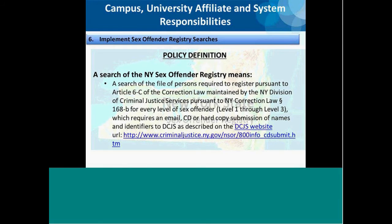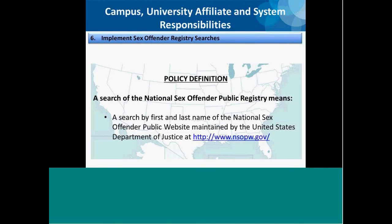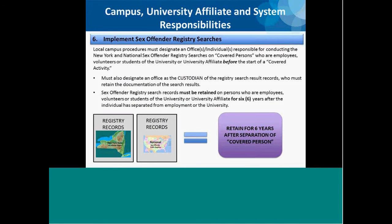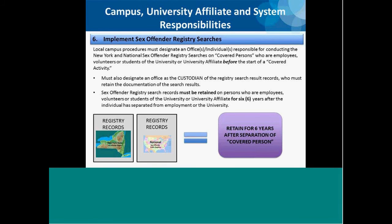The link to the DCJS website is provided on screen. A search of the National Sex Offender Public Registry means a search by first and last name of the National Sex Offender Public website maintained by the U.S. Department of Justice — the link is provided. The local procedures must designate offices or individuals responsible for conducting the sex offender registry searches before the start of a covered activity. A custodian of the registry search results must also be assigned, and search records must be retained for six years after the covered person has separated from employment or from the university.